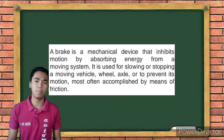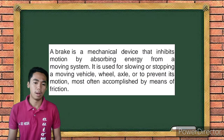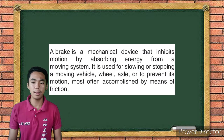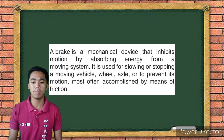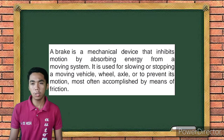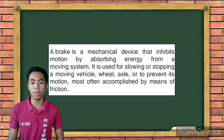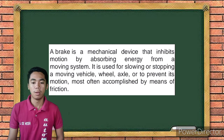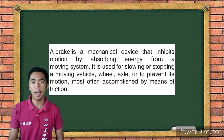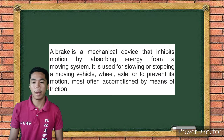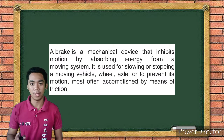What is the function of the brake system? A brake is a mechanical device that inhibits motion by absorbing energy from a moving system. It is used for slowing or stopping a moving vehicle, wheel, or axle, or to prevent its motion, most often accomplished by means of friction.